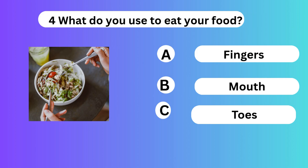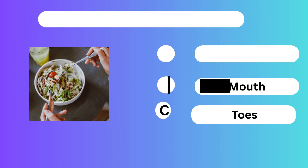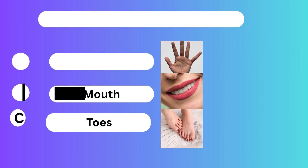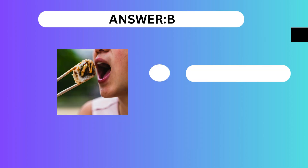Question 4. What do you use to eat your food? A. Fingers. B. Mouth. C. Toes. Answer is B. Mouth.